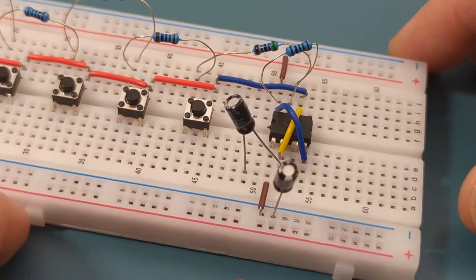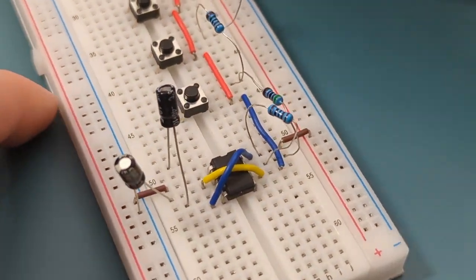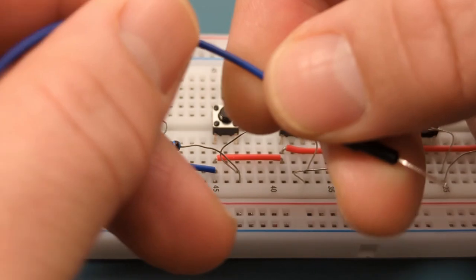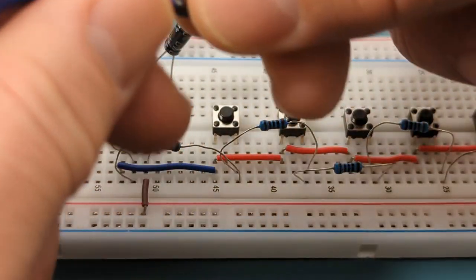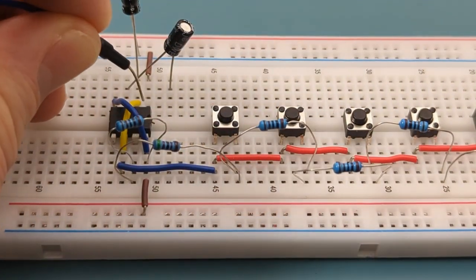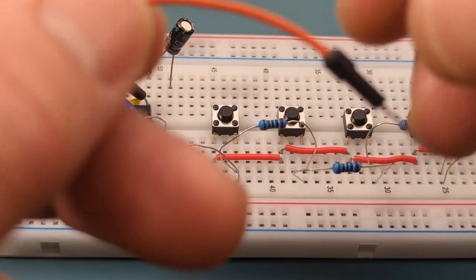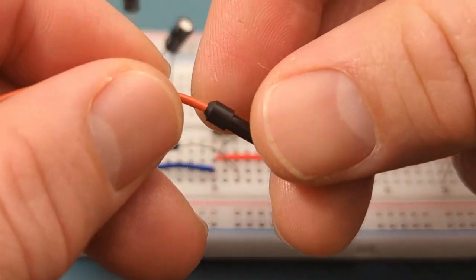Turn the breadboard to the other side. Insert a jumper wire into pin 1, or ground. Insert a jumper wire into the same row as the 10 microfarad capacitor.